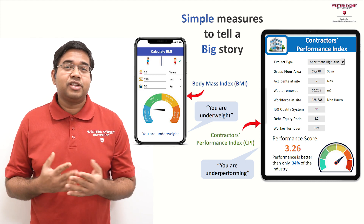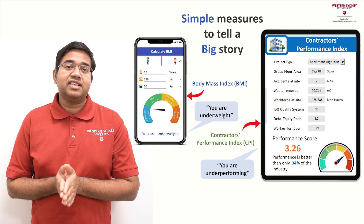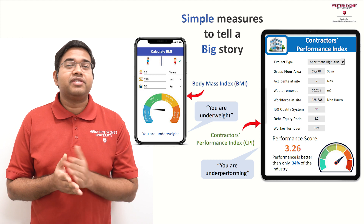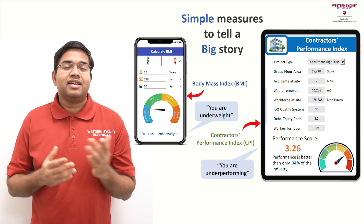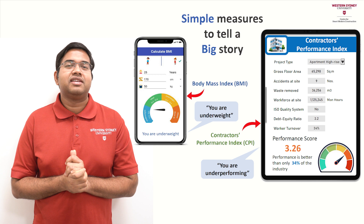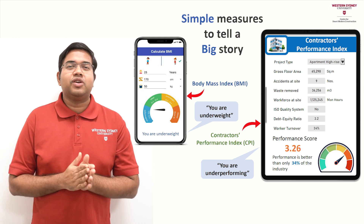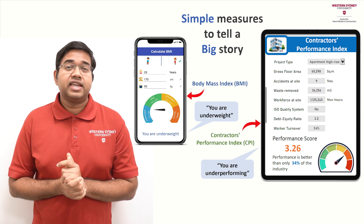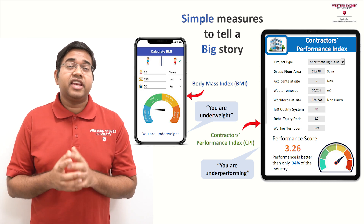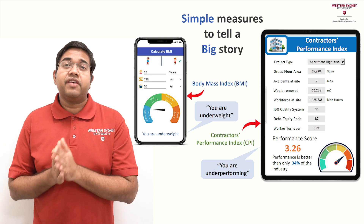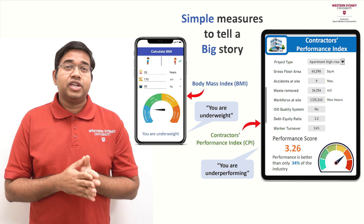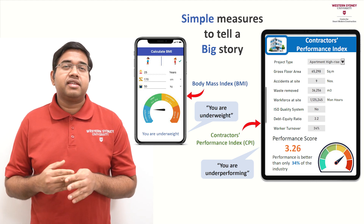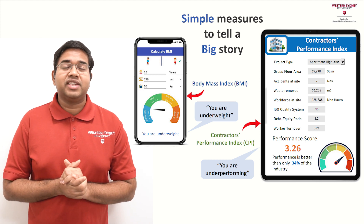So what if there was an index to measure performance of a contractor, just like how we use BMI, all based on a set of simple measures? A construction project is a massive source of data. Due to various administrative and legal requirements, millions of different data are recorded in a project. In my research, I identified the most critical measures that are readily available from such records to create a performance index. To achieve this, I used expert opinions, actual project data and mathematical simulations.